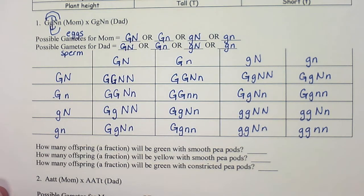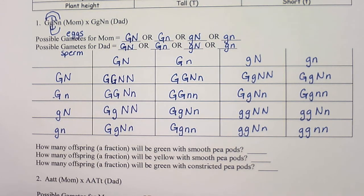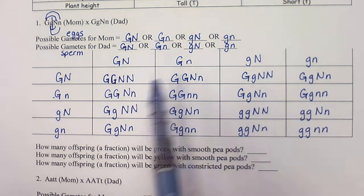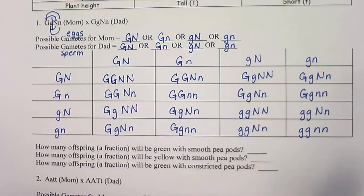And there we have a completed dihybrid Punnett square. These are tricky — not quite the same as monohybrids, and they can be a little cumbersome. As you can see, this is a lot bigger, so you definitely want to take your time and go slow.